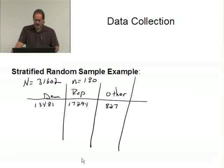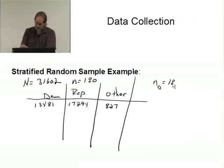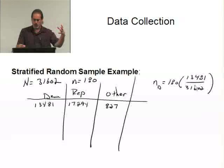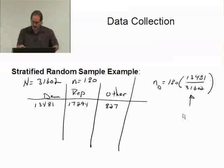Now, the question is, how on earth am I going to figure out how many to sample from each? Well, if you reach for your calculator, you will see that for the Democrats, I'm going to write N sub D. This is sample size D for the Democrats. The number I want to sample is going to be based on 180 times 13,481 divided by 31,602. You see, this right here, this proportion, makes up the proportion of the whole that the Democrats make up. So, in this particular example, this value right here is actually .4266.